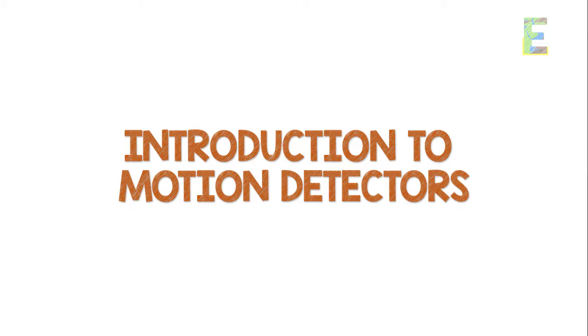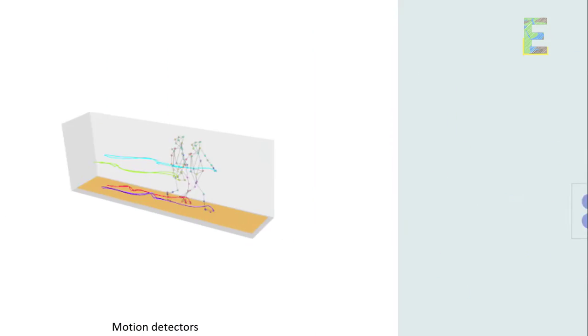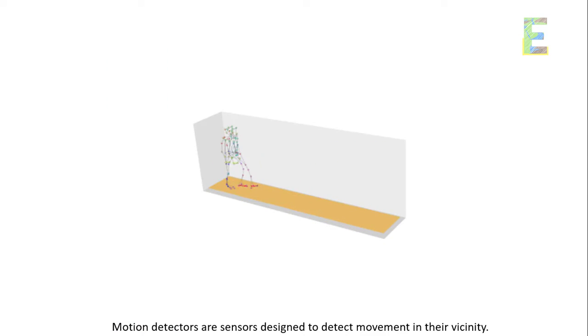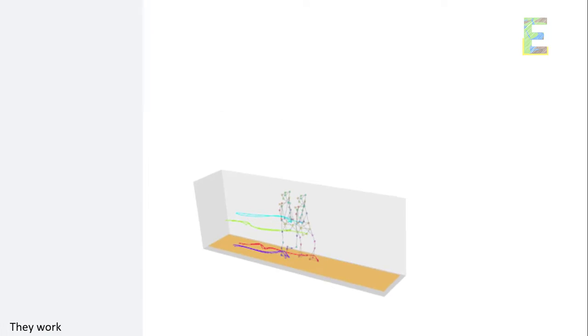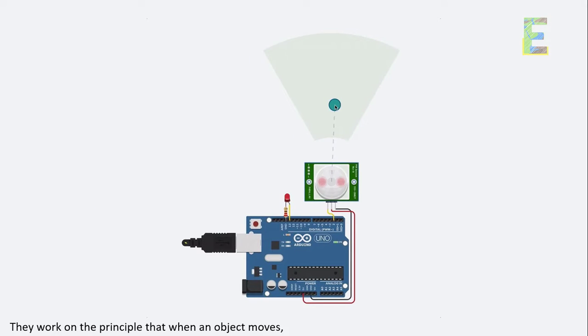Introduction to motion detectors, let's start with the basics. Motion detectors are sensors designed to detect movement in their vicinity. They work on the principle that when an object moves, it disrupts the sensor's normal state, triggering a response.